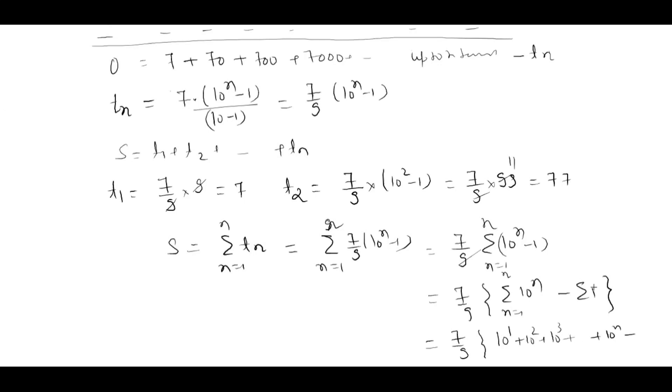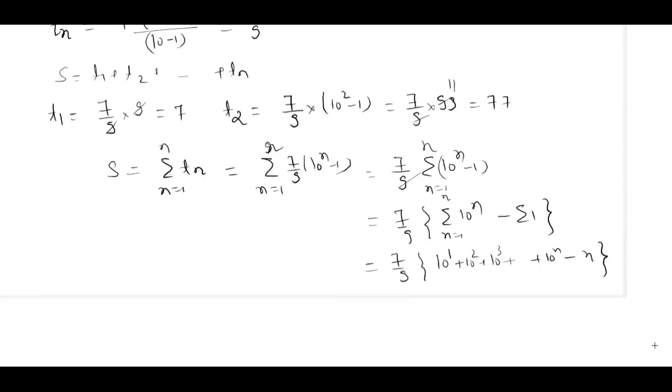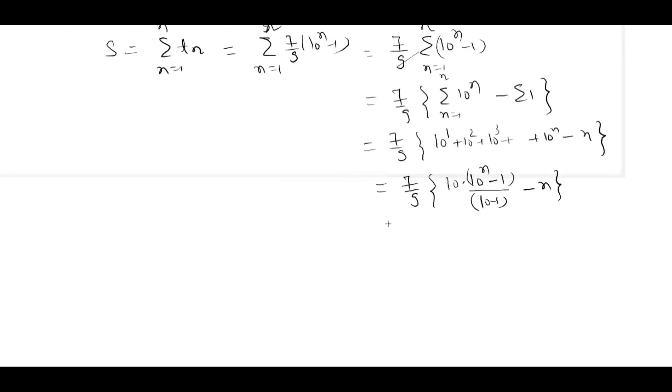Sigma 1 will simply be n. This becomes 7 by 9, and this is a GP. The GP's first term is 10, the common ratio is 10, and then we apply the formula for that. Then we have n over here.